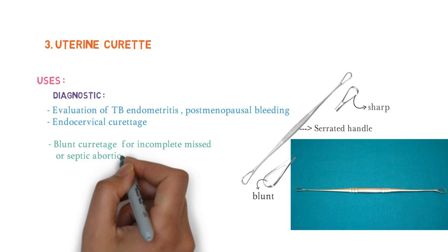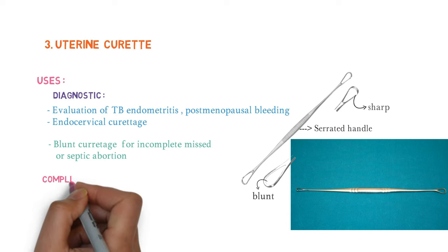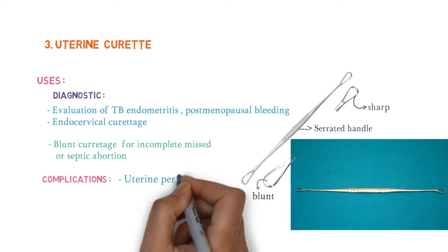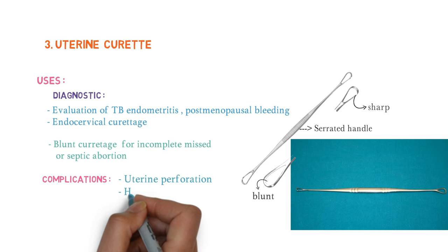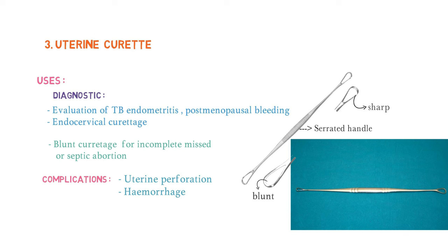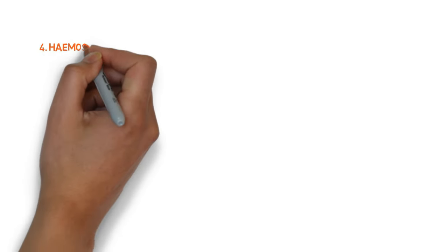If you have this instrument in your hand in front of the examiner, you must know the complications. The complications are uterine perforation — since we are curetting the uterus — and hemorrhage. The sterilization method is autoclaving.